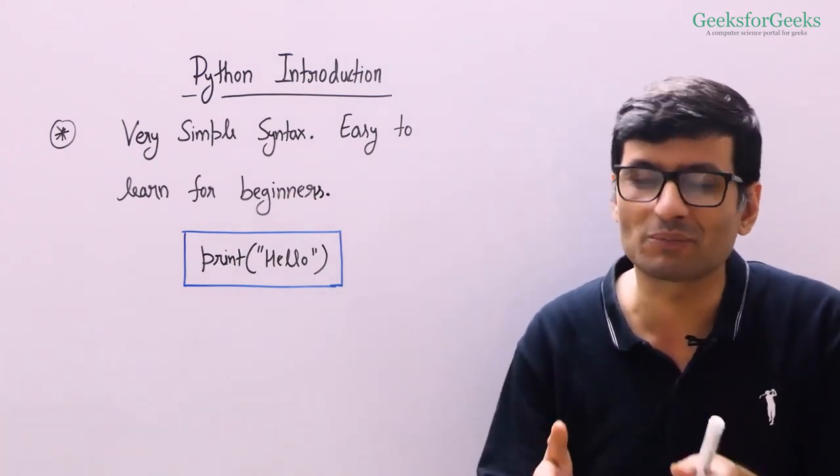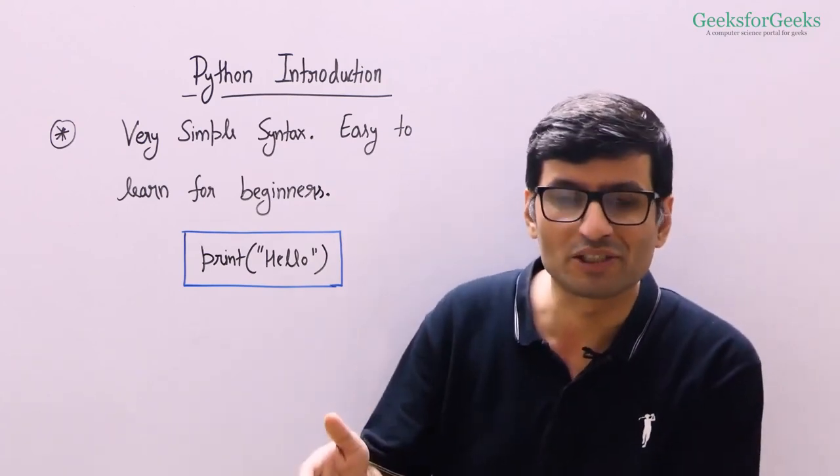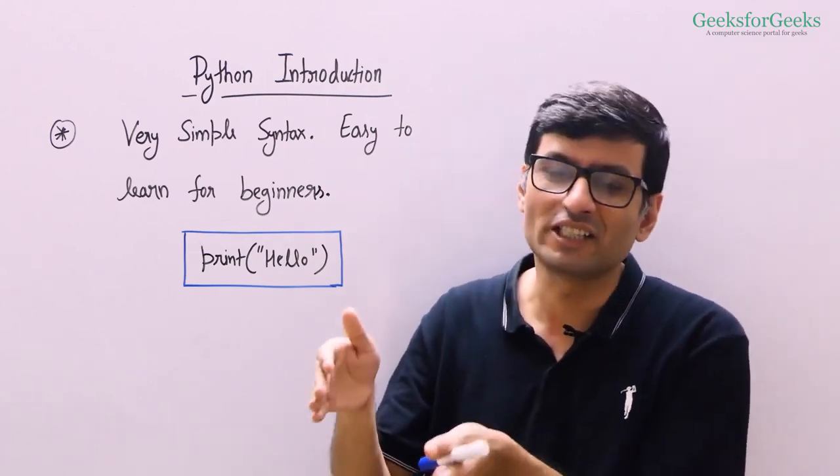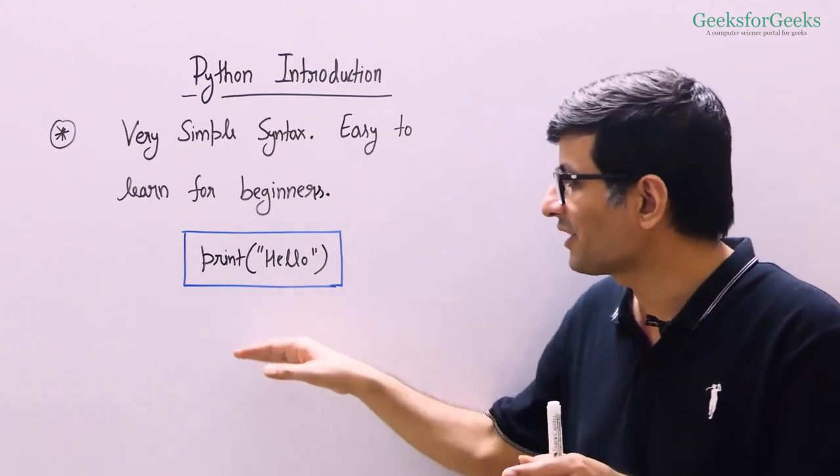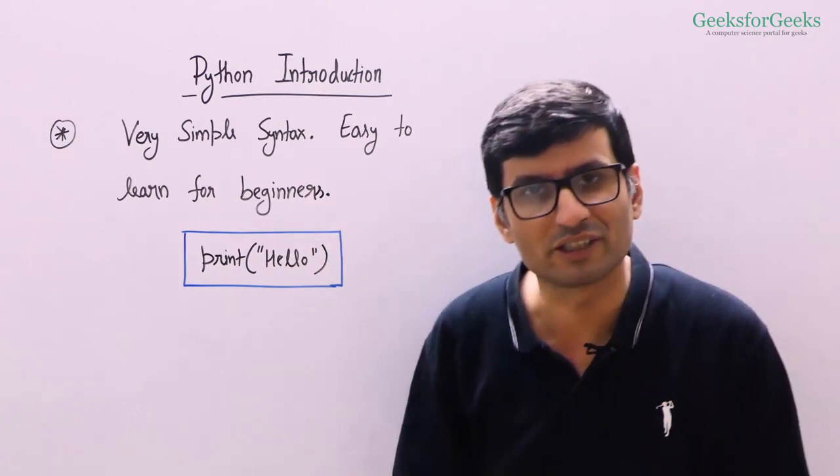For example, if you talk about the first program that you write in any programming language, it is a lengthy program in Java, it is slightly lengthy in C and C++ also. In Python, it is only one line. You simply need to write print hello and this will print hello on the screen.